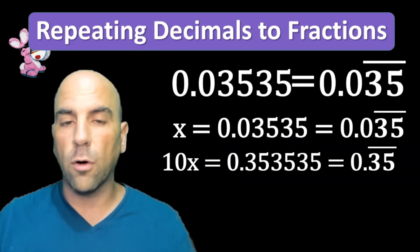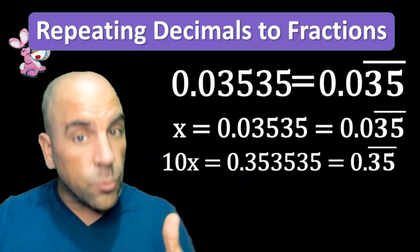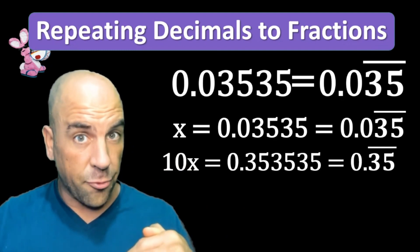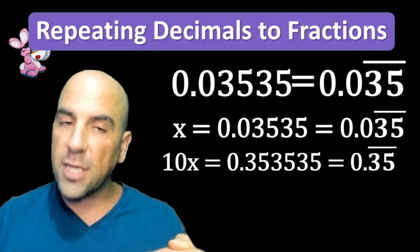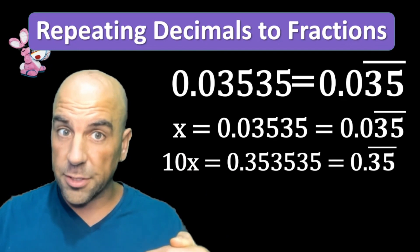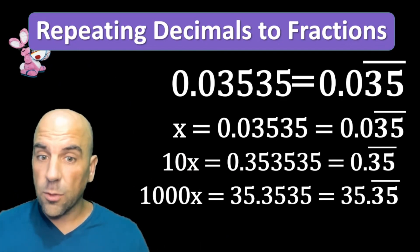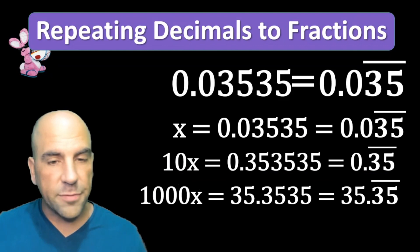In order to get rid of the 35 repeating, now we have to multiply x by 1000. 1000x is going to equal 35.35 repeating. All we have to do now is take 1000x minus 10x.